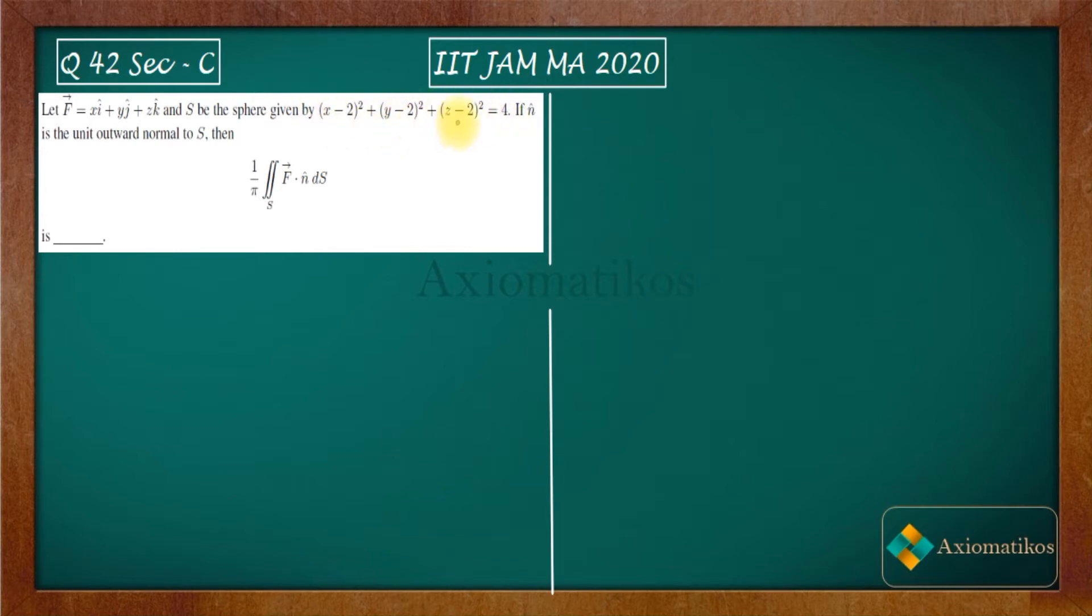So what is this? This is a sphere centered at 2, 2, 2. If n cap is the outward unit normal to S, then what we have to find out is this integral.